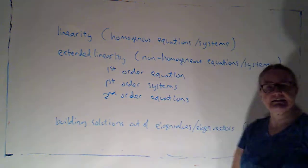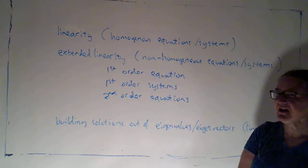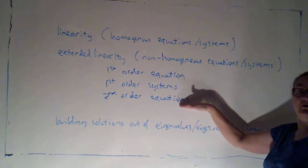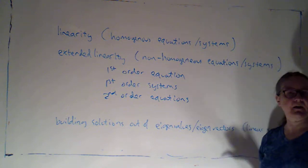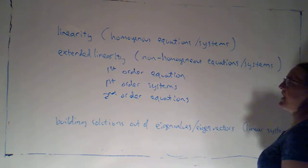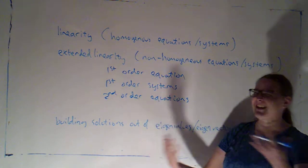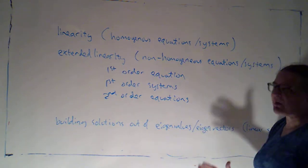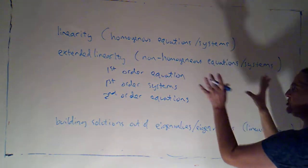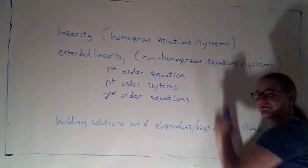I consider proofs of linearity and extended linearity to be one big topic. There was a proof on exam two but not on exam three — I tested linearity with systems but not with second-order equations. Any combination of these things is fair game for the exam because it's the same basic principle just in three different contexts. Linearity has two parts that are fairly easy to combine, and extended linearity has two parts that really have to be done separately. I'm going to prove linearity for first-order equations, and then the two parts of extended linearity for first-order systems and second-order equations.